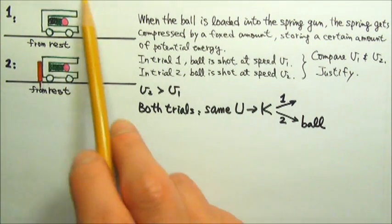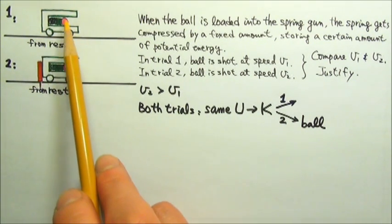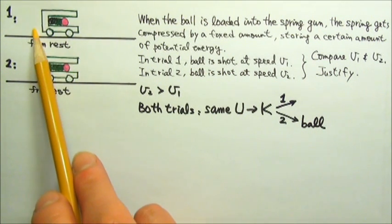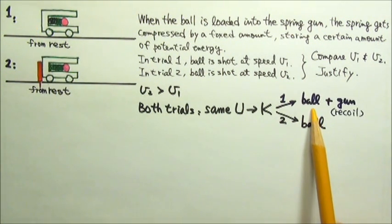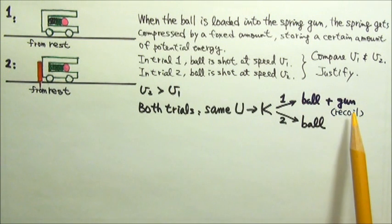In scenario 1, there is no barrier, so when the ball gets shot, the gun recoils. Both the ball and the spring gun get kinetic energy.